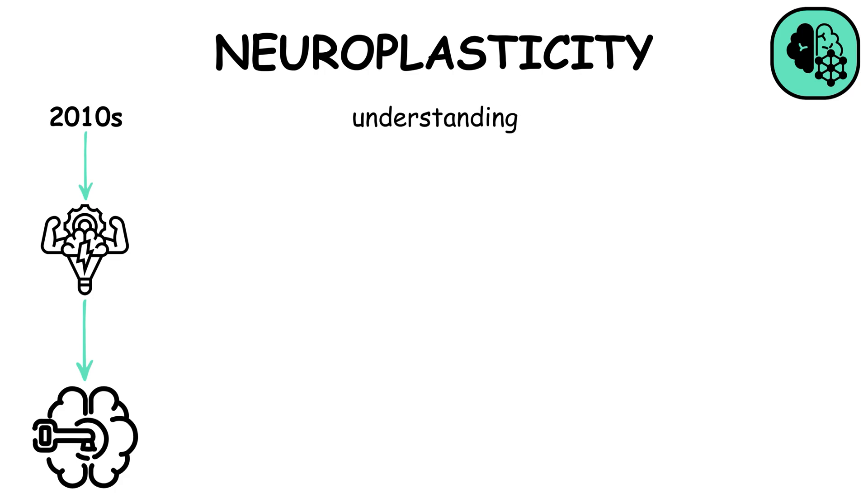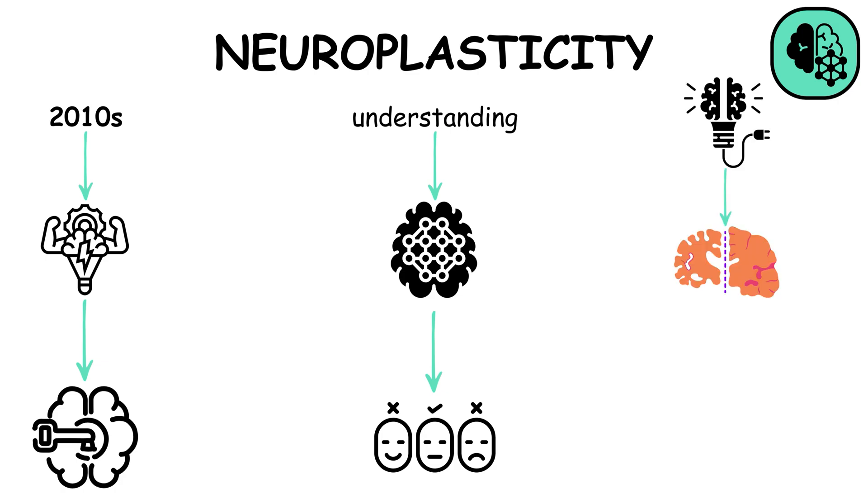Neuroplasticity, understood better in the 2010s, reveals the brain's ability to reorganize itself. This understanding shows how experiences reshape our neural networks, affecting behavior, learning, and recovery from brain injuries, emphasizing the adaptability of the human brain.